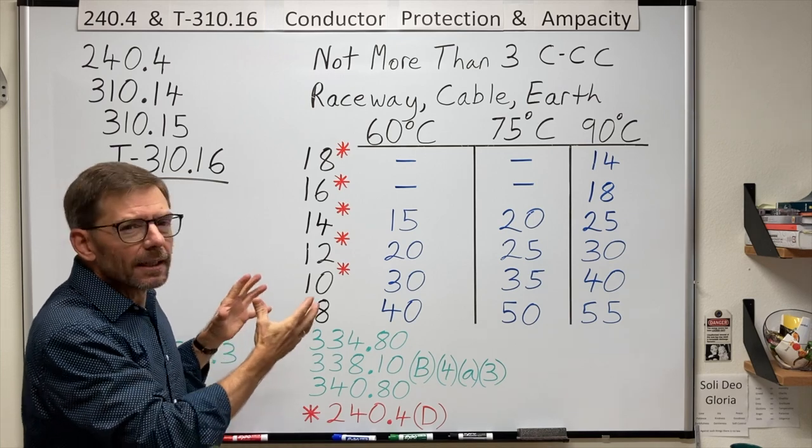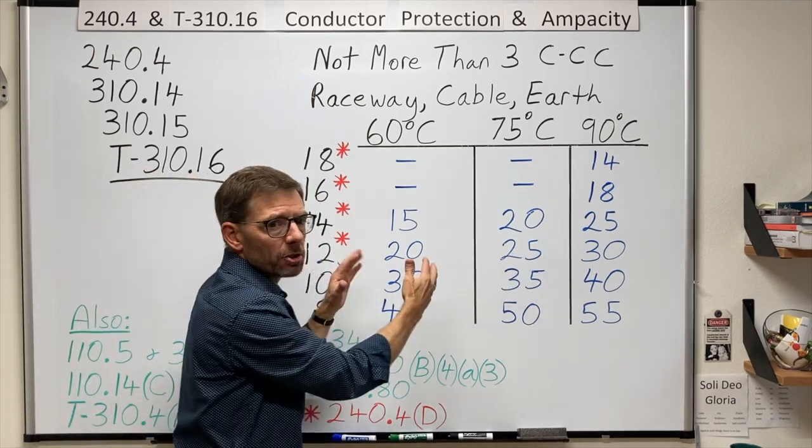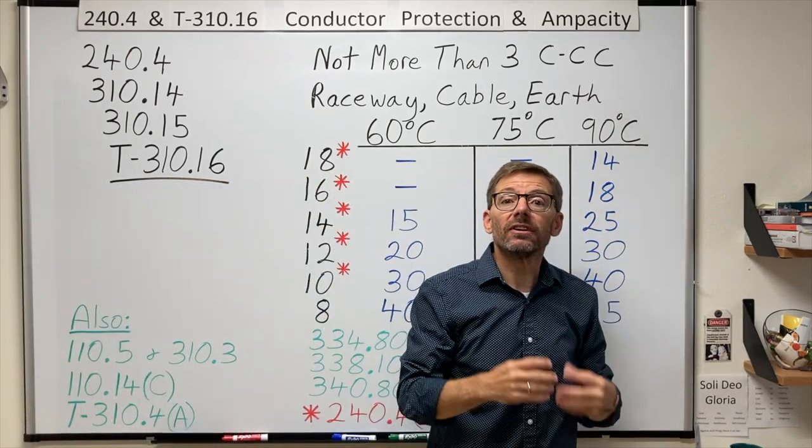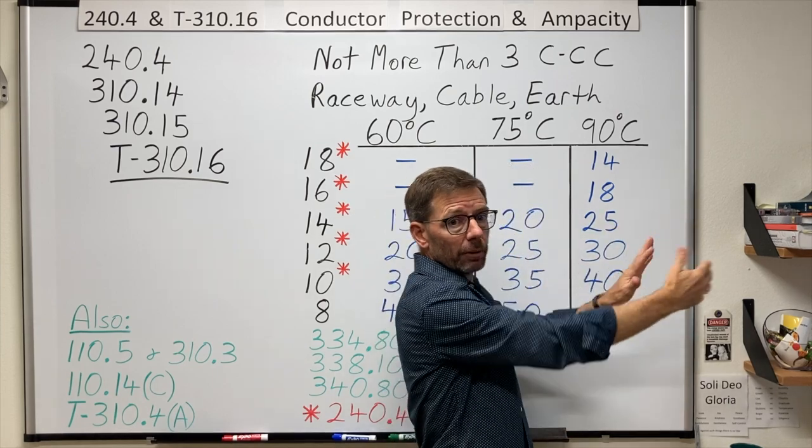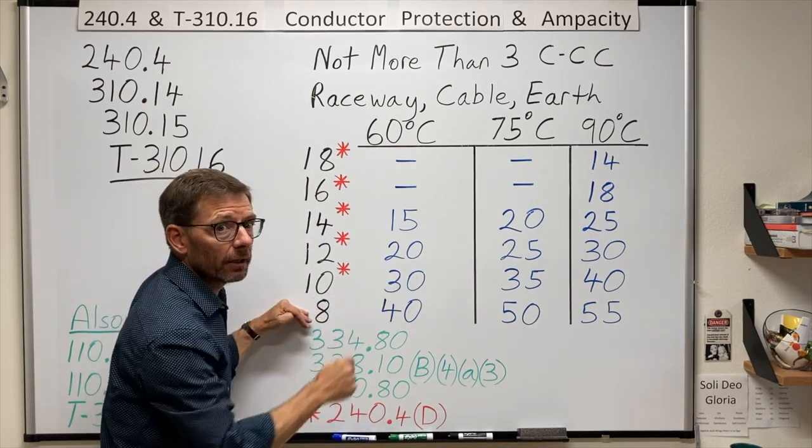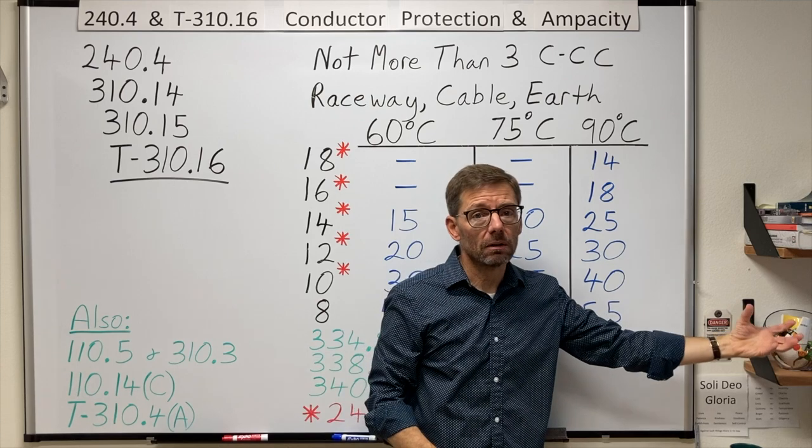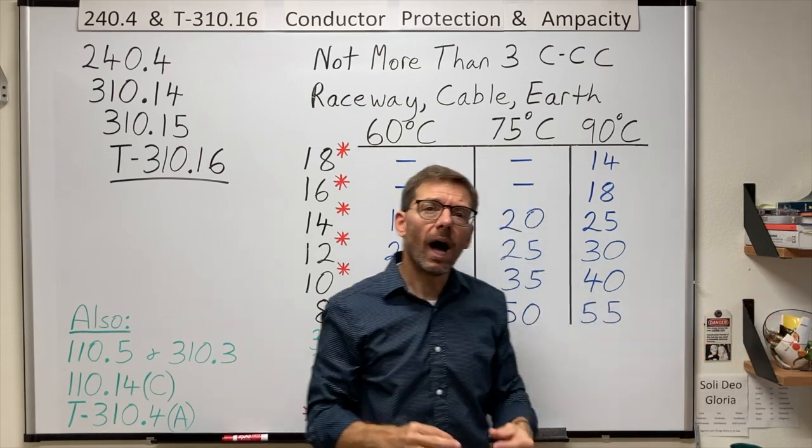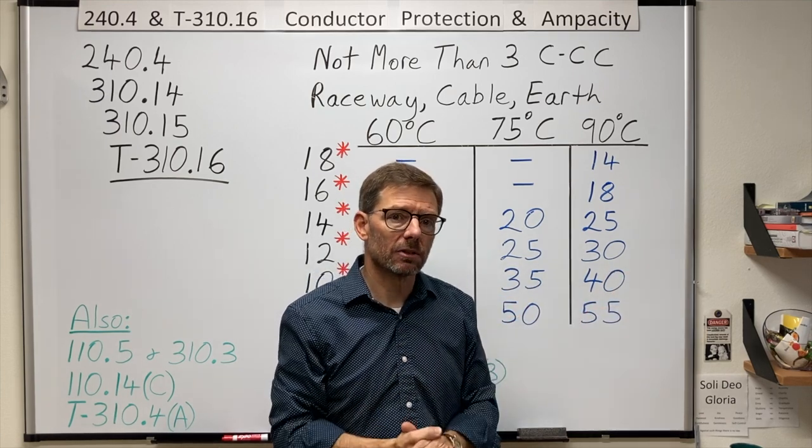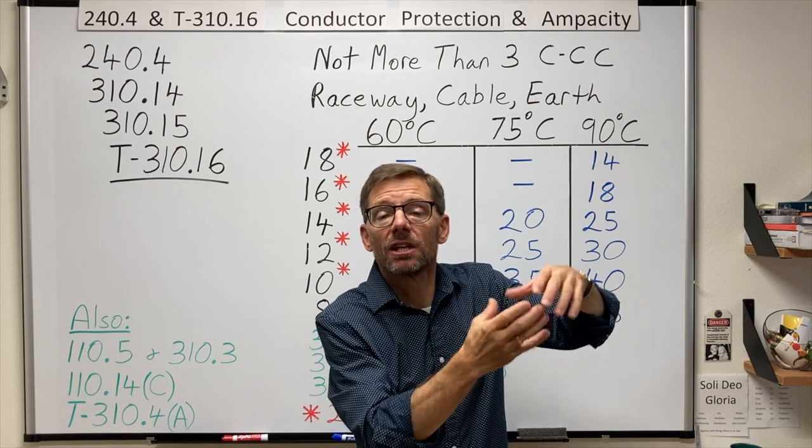Next thing I want to look at is that I only drew a small portion of the table. I just drew the copper side and a little bit of that. I didn't get into the bigger conductors. But there are three other columns that deal with aluminum. Copper on the left, aluminum on the right. The main thing I want you to notice now is that for the same size wire, a number eight copper or a number eight aluminum, the ampacities in the respective temperature columns are going to be lower in aluminum.